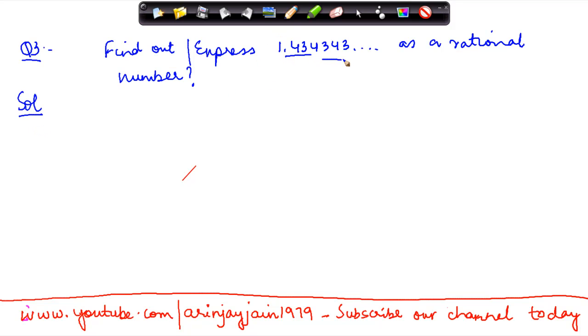We know that 1.434343 can also be written as 1.43 with a bar on top. So step one is equating.